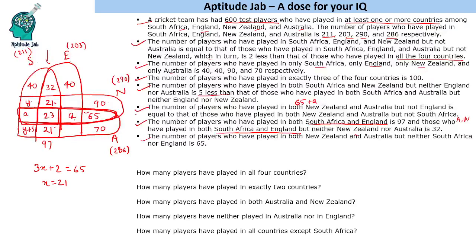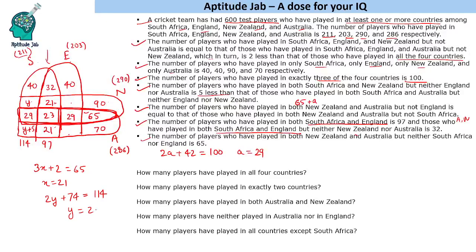Now we have used all the information. The total of the 3-country intersections is 100, giving us 2a + 42 = 100, so a = 29. These two values are both 29. Using South Africa's total of 211: the SA∩Eng belt is 97, so the remaining SA portion is 114. Adding 40 + 29 = 69, plus 5 gives 74. Then 2y + 74 = 114, so y = 20. Thus this value is 20 and the corresponding value is 25.